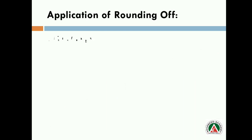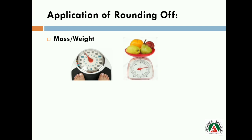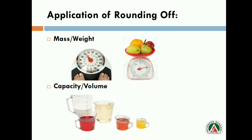We can also use this concept in measuring mass or weight. While measuring your weight, we say 46 kg — we never say 46.2 kg. We round it and say just the round figure, the estimated figure: 46 kg. This applies while measuring the weight of fruits also. And in capacity and volume, while taking any liquid or juice, we can use this concept too.